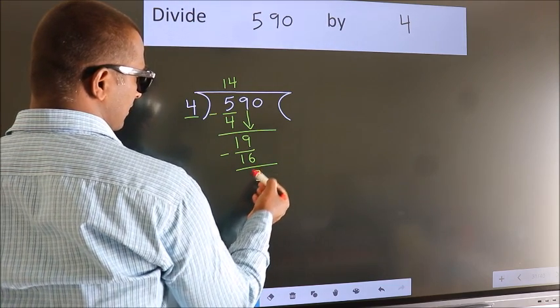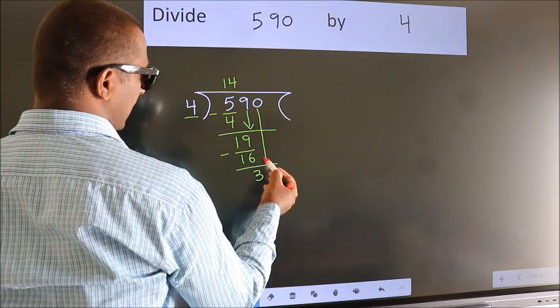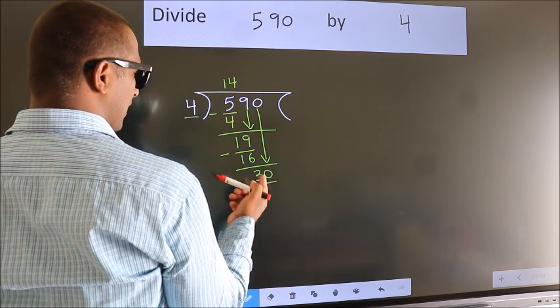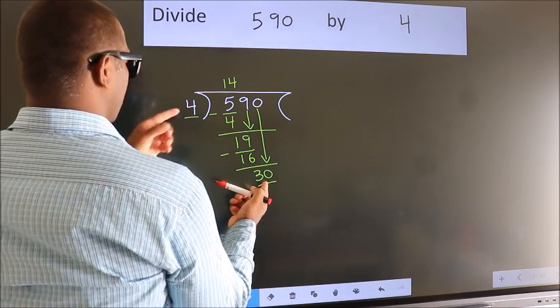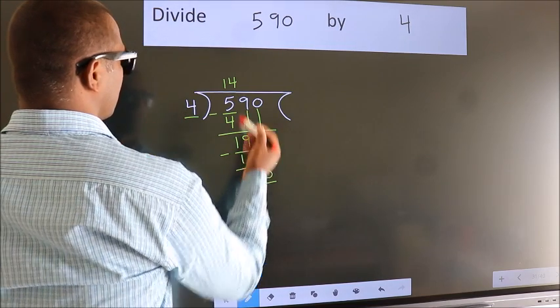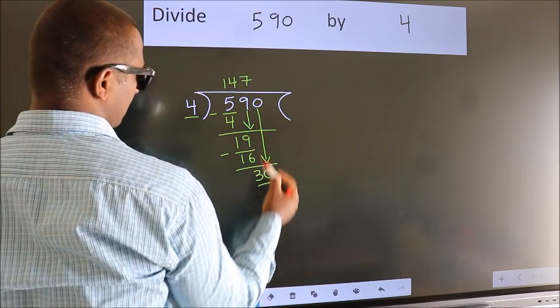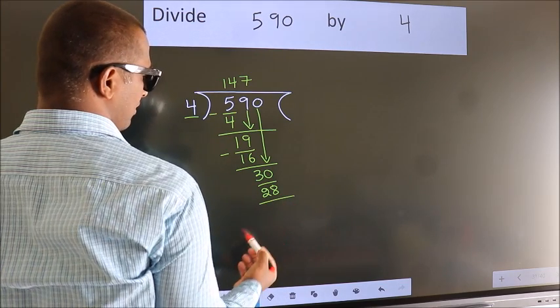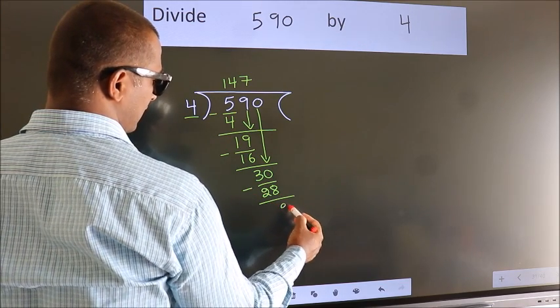After this, bring down the next number. So 0 down, making 30. A number close to 30 in the 4 times table is 28. Four sevens is 28. Now we subtract and get 2.